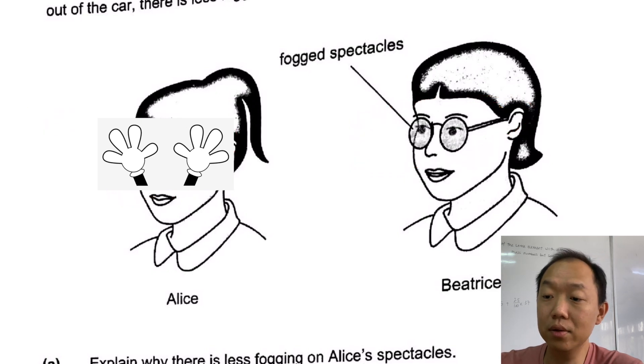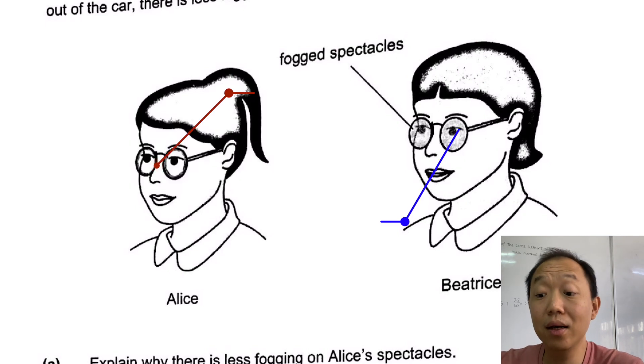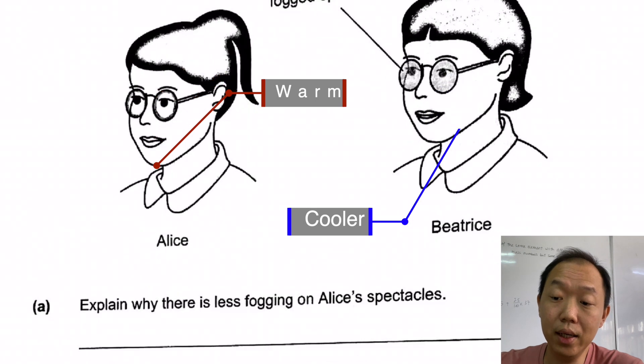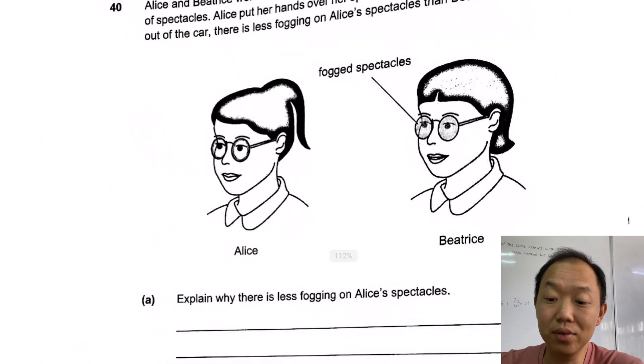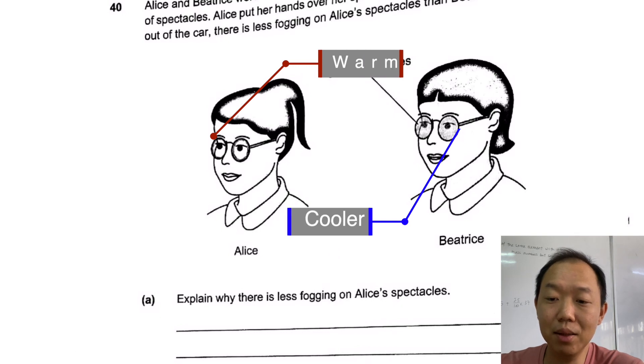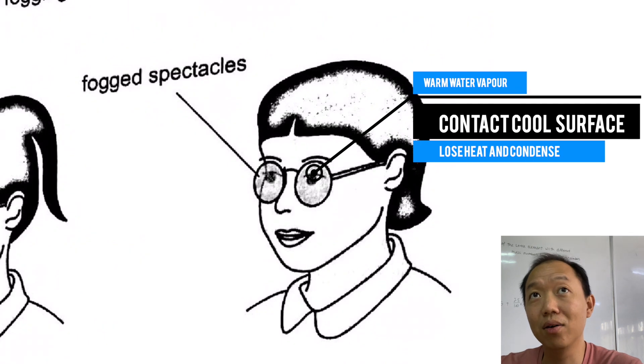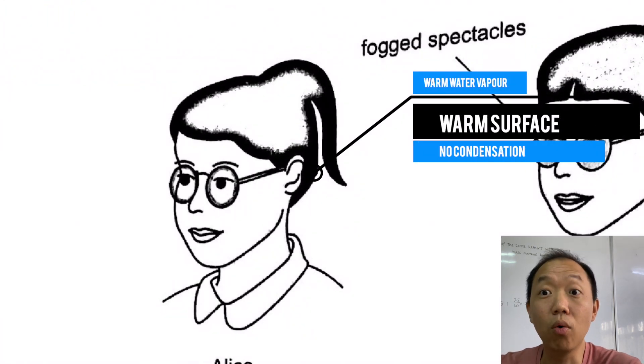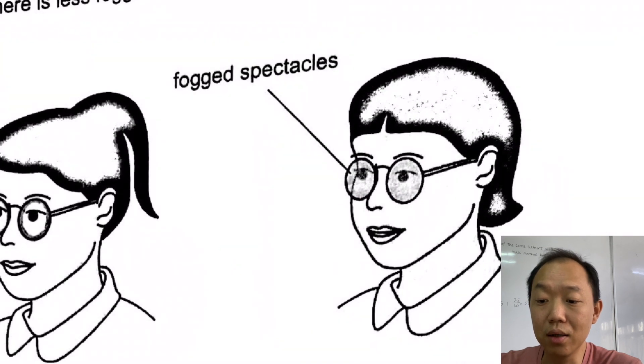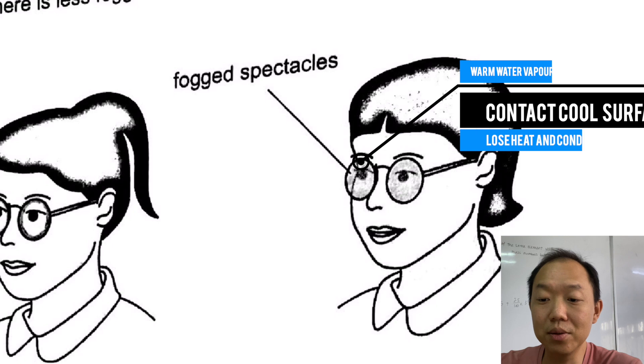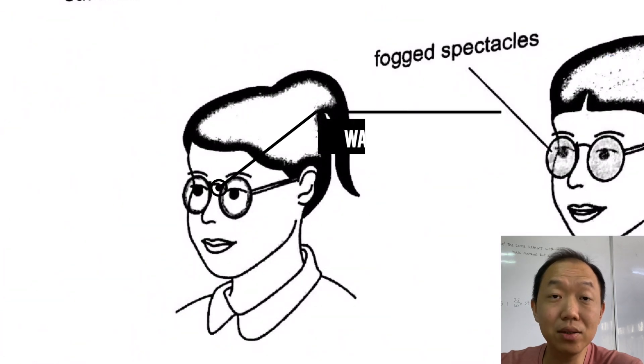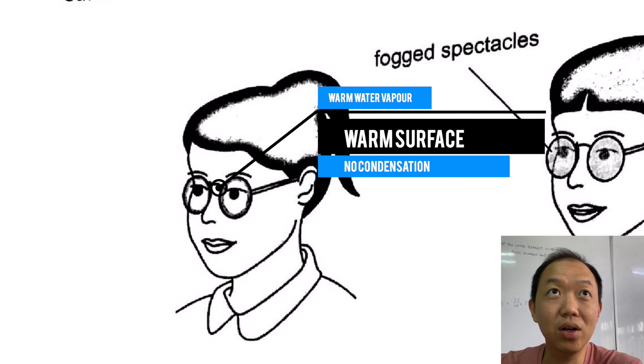What happens is that when Alice put her hand over her spectacles throughout the entire journey, the spectacles is warmer than Beatrice's spectacles. Alice's spectacles is warmer than Beatrice's spectacles. So when they stepped out of the car, warm water vapour is going to come into contact with the cooler surface of Beatrice's spectacles and condense.